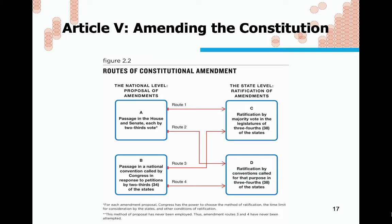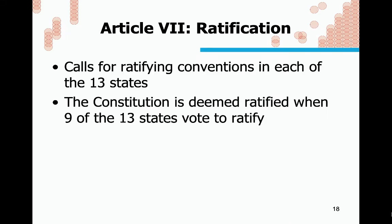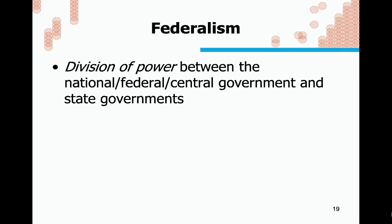That is a lot to ask, especially given how polarized U.S. society is today. Ratification is addressed in Article VII — it called for ratifying conventions in each of the 13 states, and once nine of them voted to ratify, the Constitution entered into force. Federalism — the division of power between the national government and state governments — was established with the hope that competition between the two would limit the power of both.